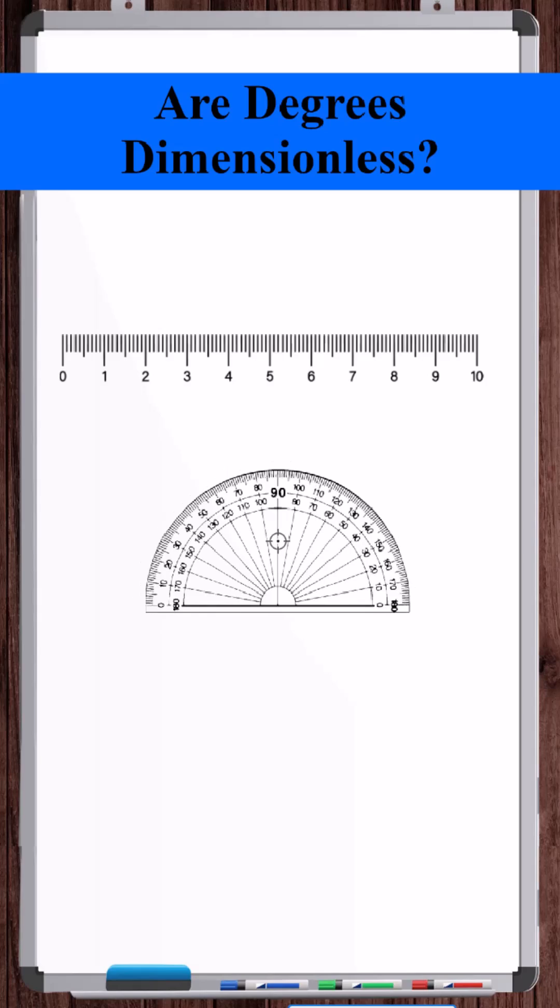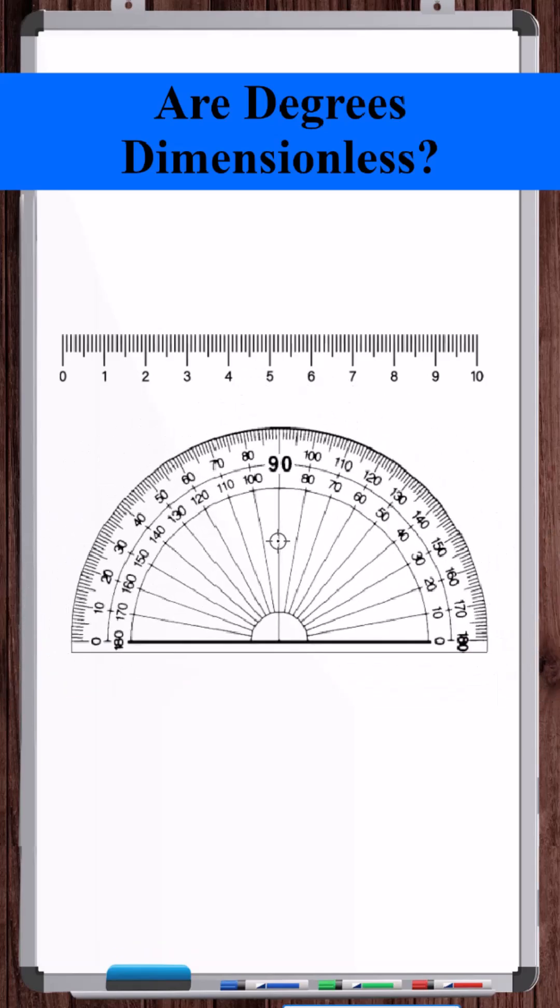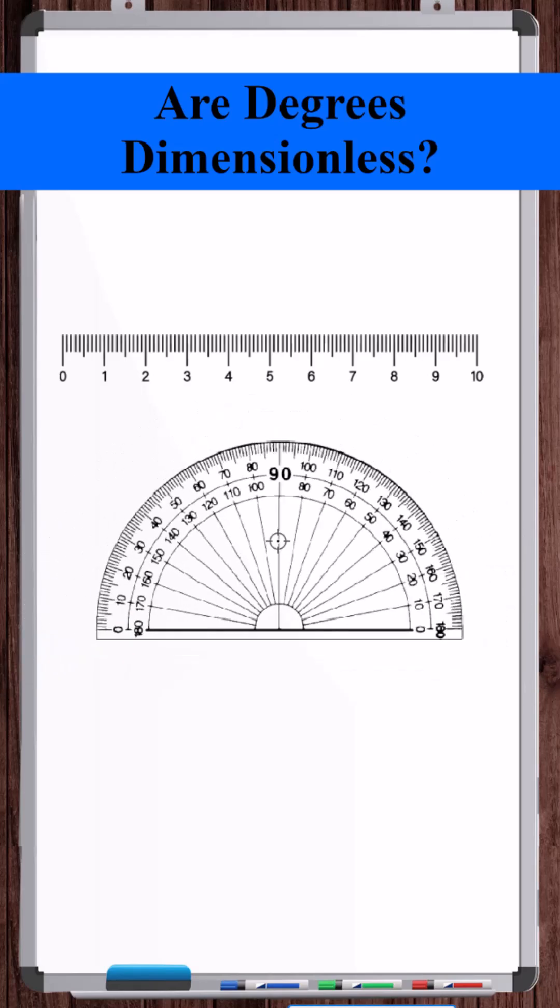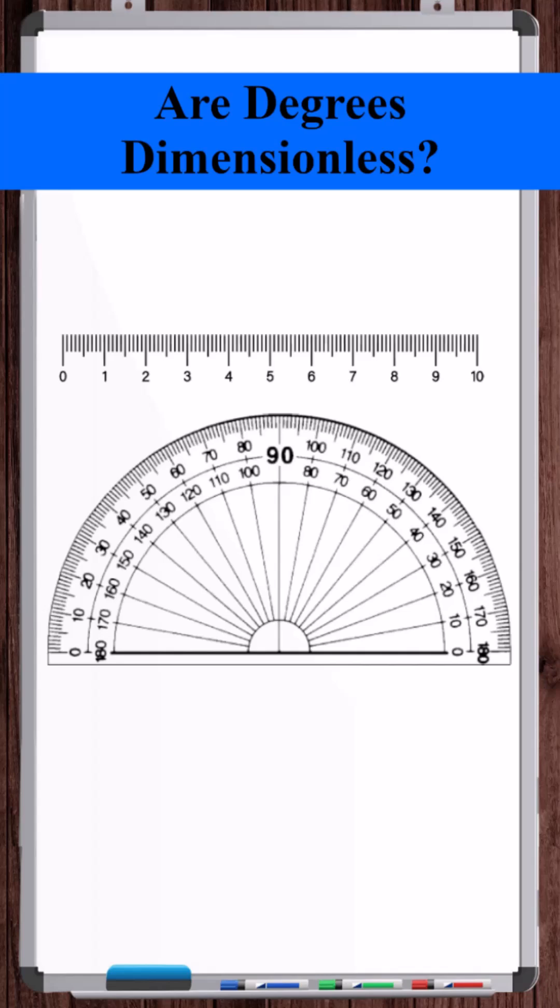However, if you took a protractor and you scaled its size, the protractor wouldn't be compromised. You could still accurately measure angles, regardless of the size of the protractor. And that gives you a sense of why angles are dimensionless.